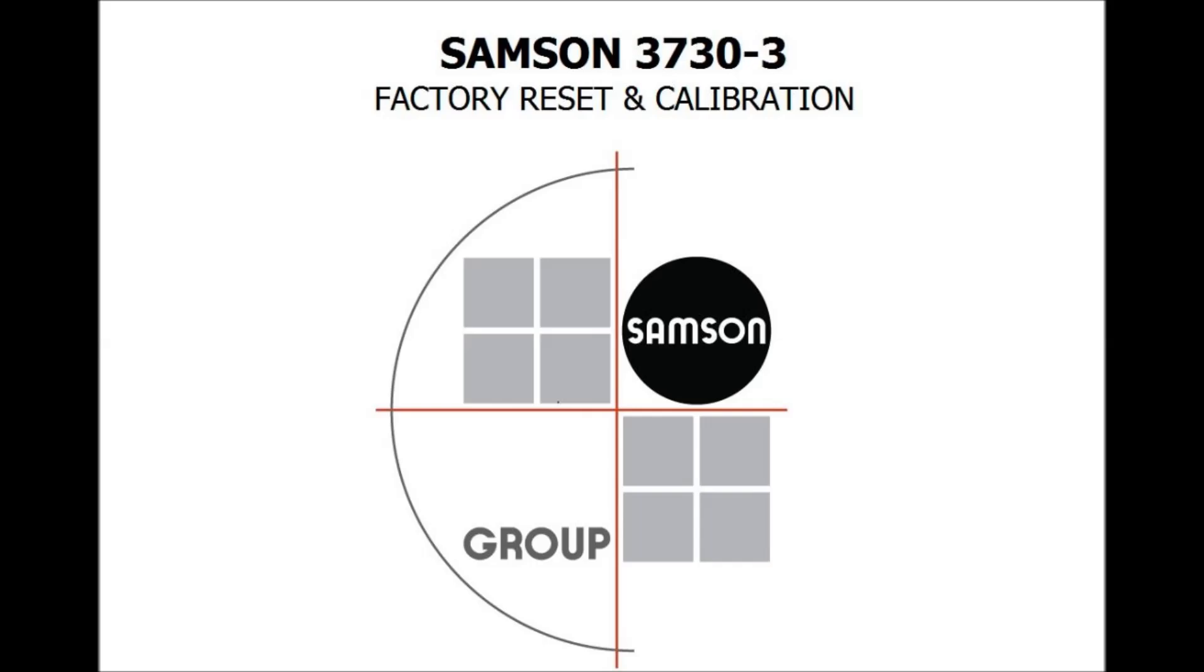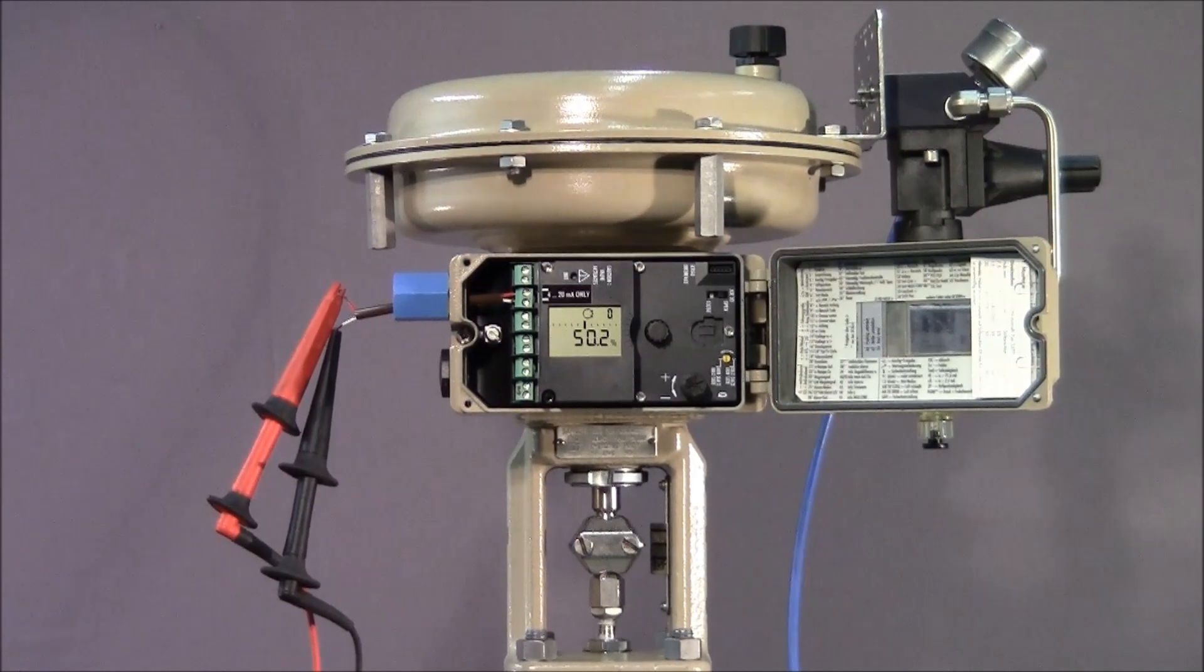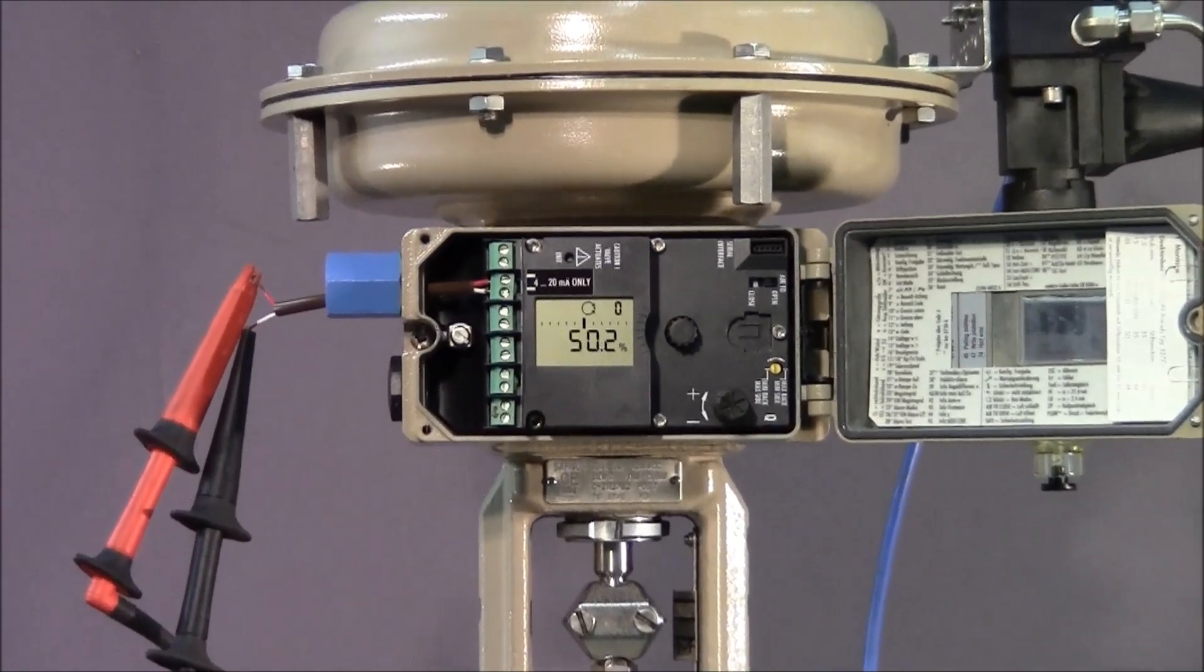In this short how-to video, we'll illustrate how to reset a 3730-3 positioner to factory default settings and perform an auto-calibration. Detailed step-by-step instructions can also be found by following the link below. This process should be performed after conducting any maintenance requiring valve disassembly or if you're experiencing positioner problems resulting in erratic valve behavior.